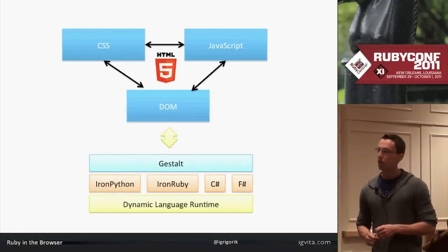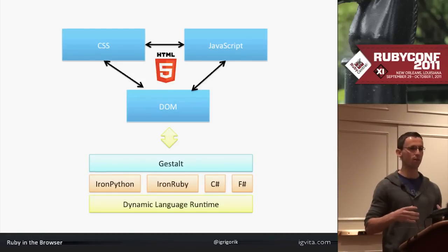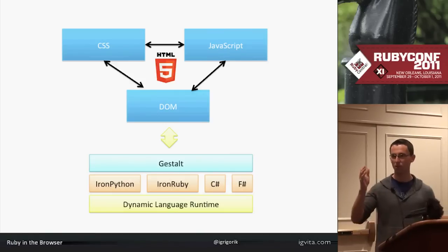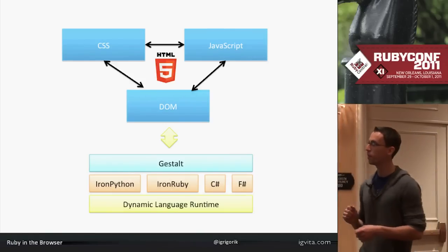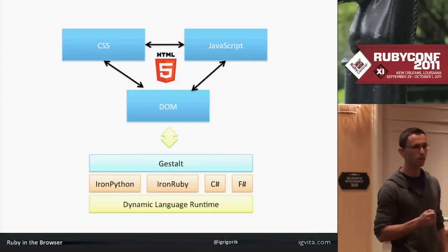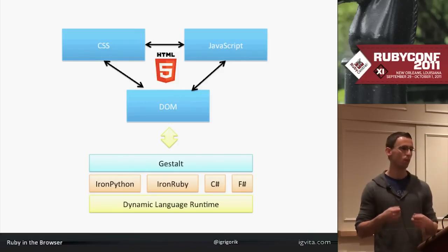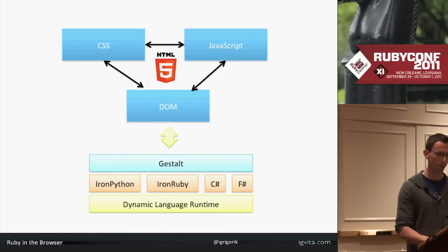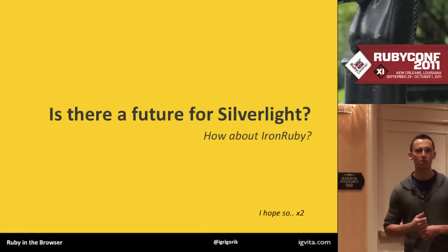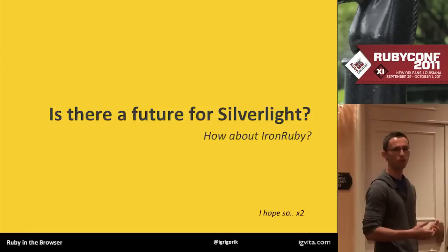So how does this work? Microsoft has this project which a lot of people love to hate called Silverlight. Silverlight actually embeds the DLR — their Dynamic Language Runtime — on which projects like IronRuby, IronPython, and a bunch of others run. C# and F# would also run on the DLR. They built a shim called the Gestalt layer, which is a library that provides a way to communicate between the browser and the DLR. So you have the Silverlight plugin running inside the browser, and then you're communicating back and forth. You can manipulate the DOM, you can do anything you would effectively do in your JavaScript runtime.